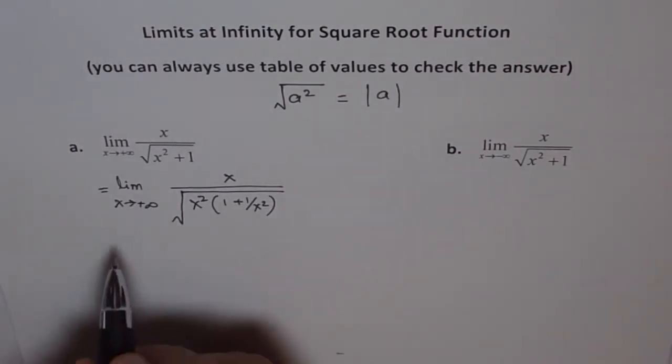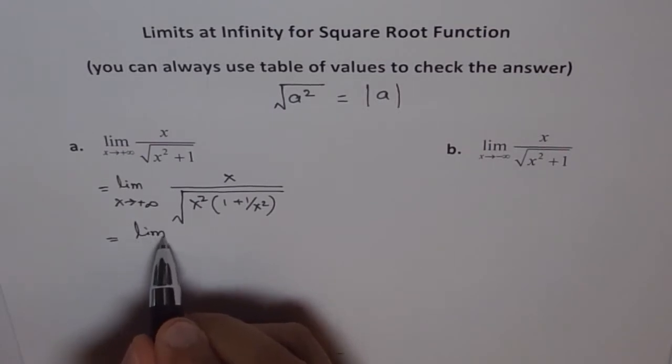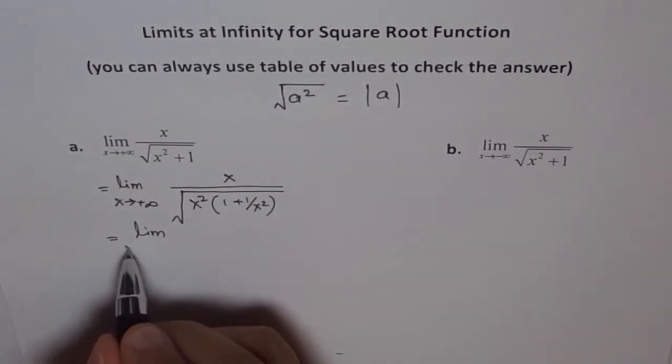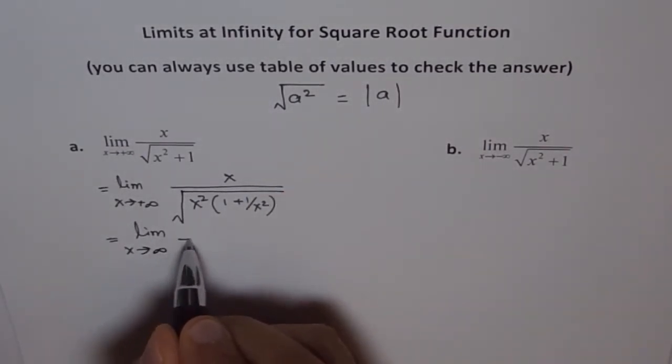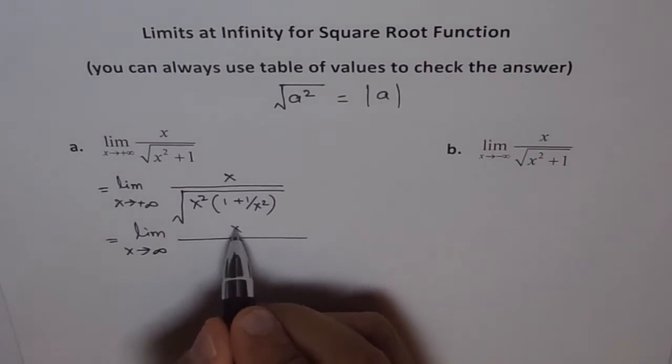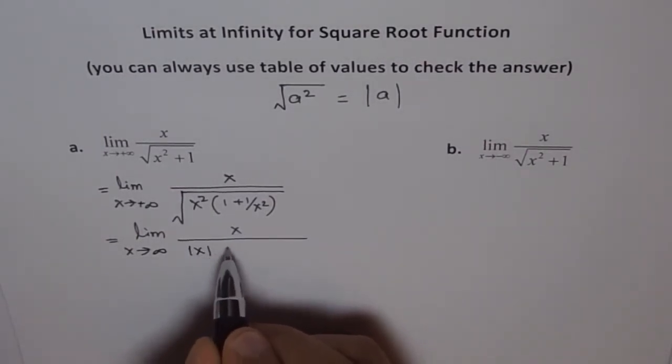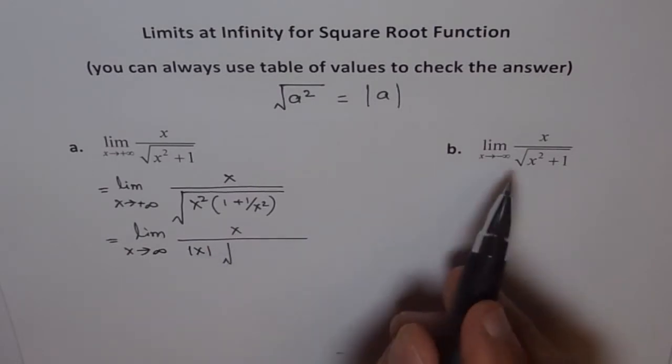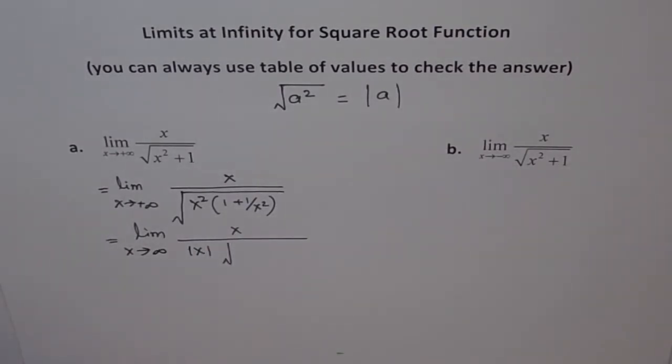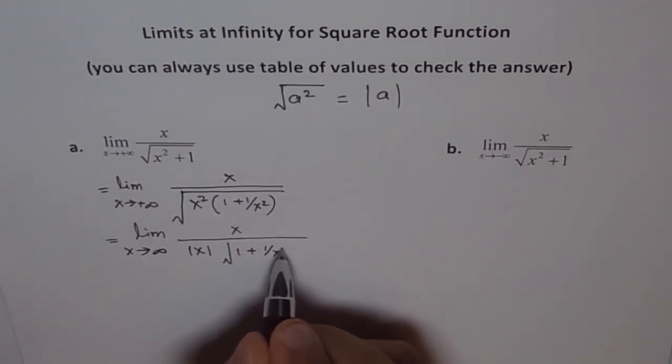Now in this case we will use our information about this. We say x approaches infinity and if I take it out of the square root sign what should I get? I get a value not x, absolute value of x. This is very important. It makes huge difference in these two questions and that's the reason why I put them side by side. So we get 1 plus 1 over x square.